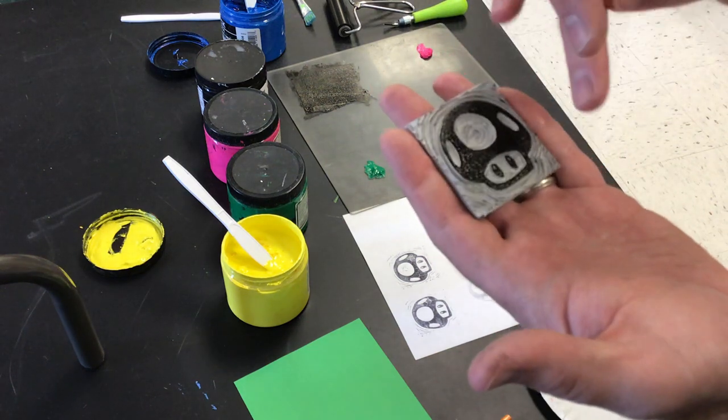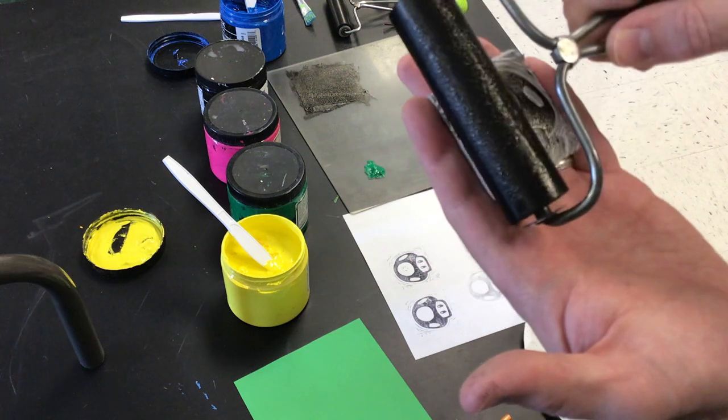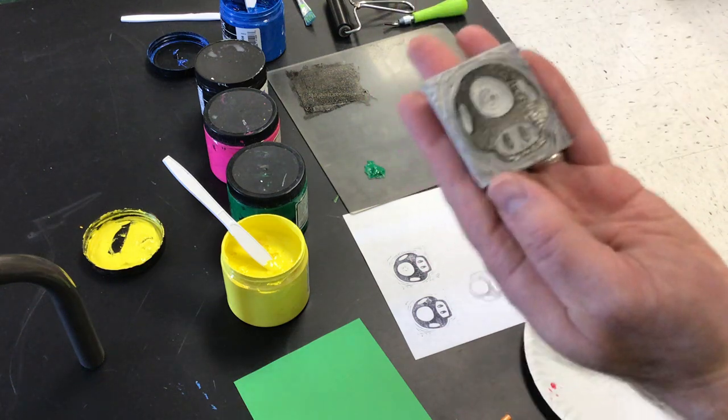Don't squish any of the paint in the areas you don't want to print. You just want to go on that flat area that you actually want to print.